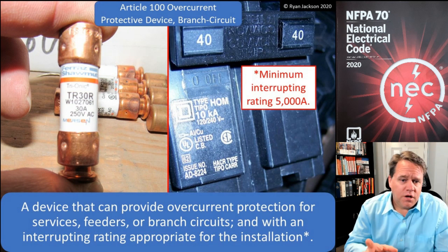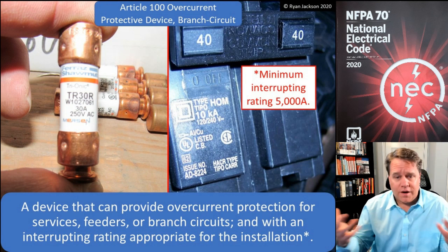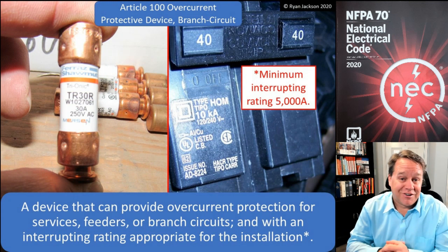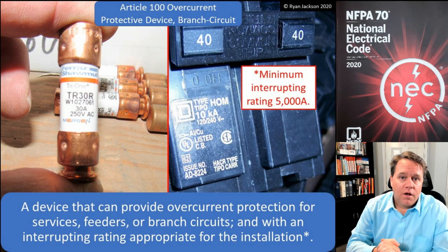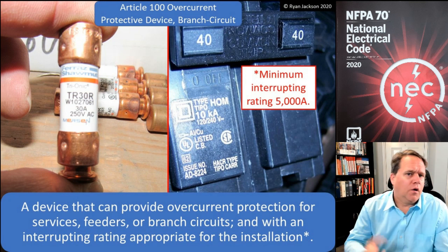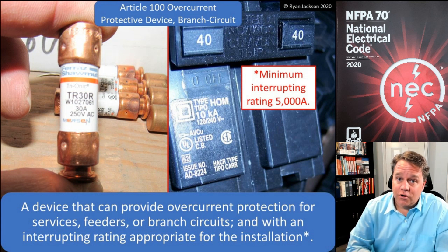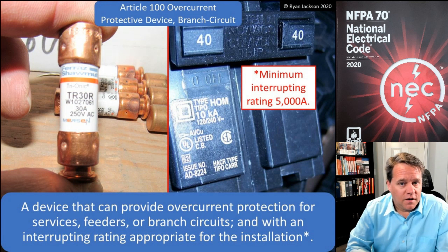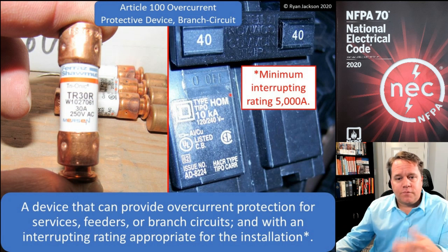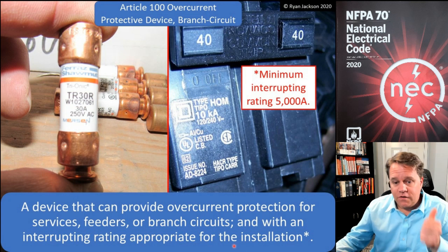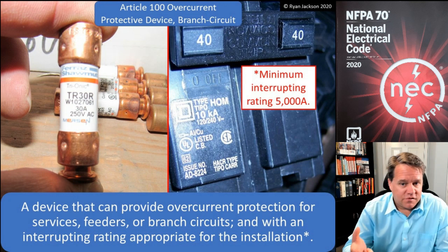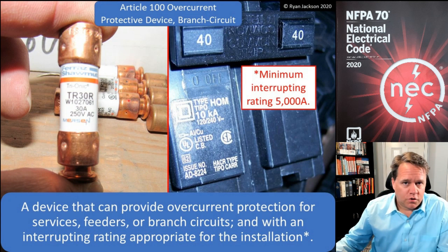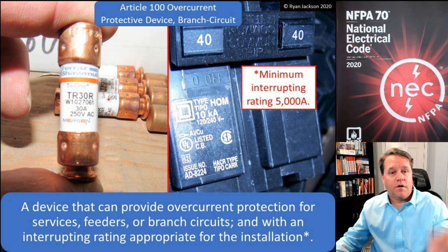Usually we use one device to protect against all three forms of overcurrent. For example, a bathroom circuit has a 20-amp circuit breaker. If you plug in five hair dryers and a curling iron, that 20-amp breaker trips — that's an overload. If you cut the cord on your hair dryer while it's plugged in, that's a short circuit or ground fault, and that also trips the 20-amp breaker. A branch circuit overcurrent device provides protection for services, feeders, or branch circuits and has an interrupting rating never less than 5,000 amps.